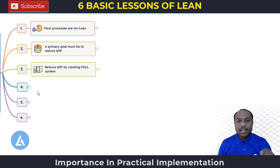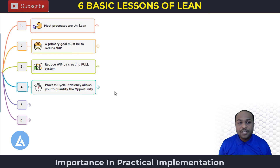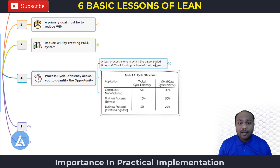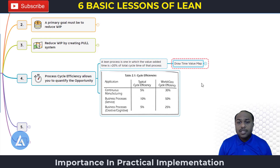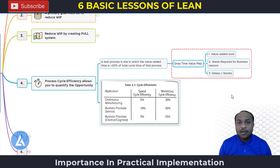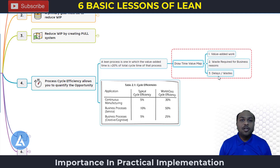The fourth lesson of lean is related to process cycle efficiency. Process cycle efficiency allows you to quantify the opportunity for improvements. A lean process is one in which value added activities represent more than 20% of the total cycle time. To identify value added activity time, we can use the value stream map or the time value map, which help us identify: value added work, activities required for business reasons, and real delays and waste in your business operations.